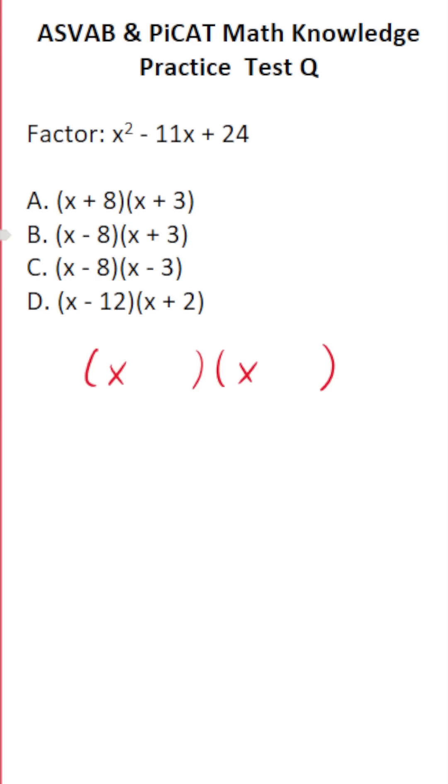Of course, our goal here is to find two numbers that multiply to positive 24 but add to negative 11. Now, many of you could do this mentally, and you should get to the point where you could do this mentally for the ASVAB and PiCAT. That said, if you can't do it mentally, just list out the factors of 24.